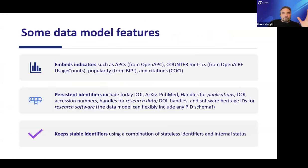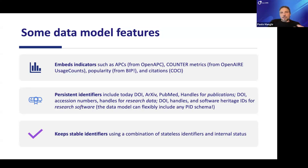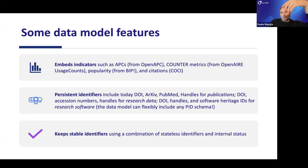Some data model features: we embed all sorts of indicators — citations from many indexes including Crossref and OpenCitations, and also inferred from PDFs we download and mine. We are open to any persistent identifiers, not just DOIs. We keep stable identifiers in the graph, assigning identifiers to groups of objects merged through deduplication, to make the graph reusable across different versions over time.